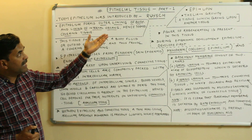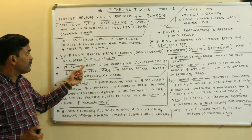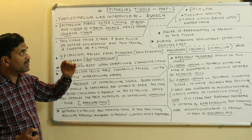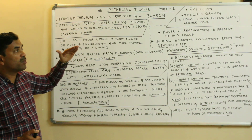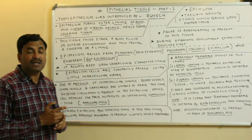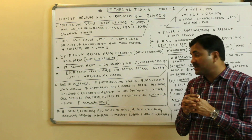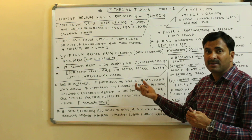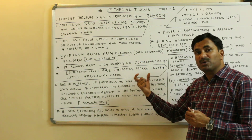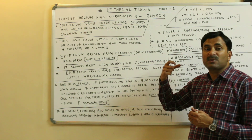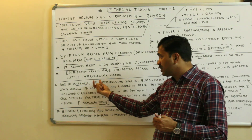Epithelial tissue rests upon the underlying connective tissue. A key feature of epithelial tissue is that its cells are very compactly packed with little or no intercellular spaces or matrix.